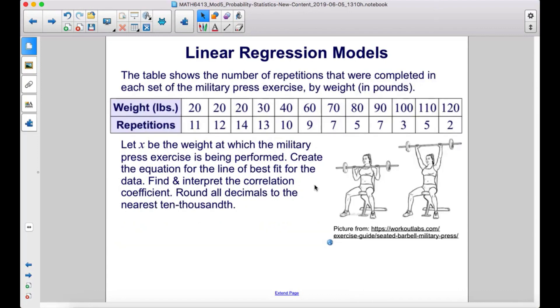The table shows the number of repetitions that were completed in each set of the military press exercise by weight in pounds. Let x be the weight at which the military press exercise is being performed. Create the equation for the line of best fit for the data. Find and interpret the correlation coefficient. Round all decimals to the nearest ten-thousandth.